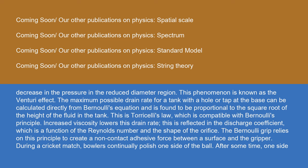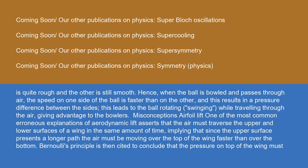During a cricket match, bowlers continually polish one side of the ball. After some time, one side is quite rough and the other is still smooth. Hence, when the ball is bowled and passes through air, the speed on one side of the ball is faster than on the other, and this results in a pressure difference between the sides. This leads to the ball swinging while traveling through the air, giving advantage to the bowlers.